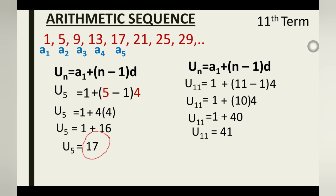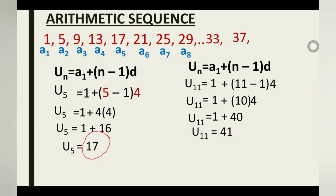We can verify this from our sequence. If our 5th term is 17, then 21 is the 6th term, 25 is the 7th, 29 is the 8th. Our 11th term is three terms ahead of 29. Adding 4 to 29 gives 33, adding 4 to 33 gives 37, and adding 4 to 37 gives 41. That confirms the 11th term is 41.